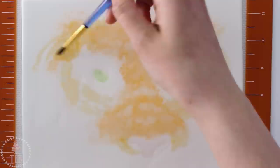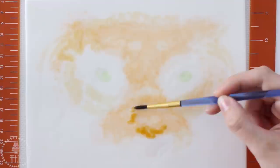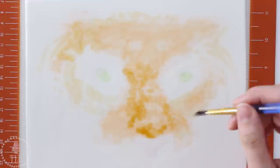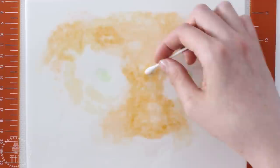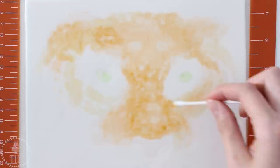So now I'm going to start building up some depth around the nose and the forehead especially, just using my picture as a reference. This watercolor style is really forgiving. You know, if you add too much then you can use a clean cotton swab and just dab it away or some clean paper towel.